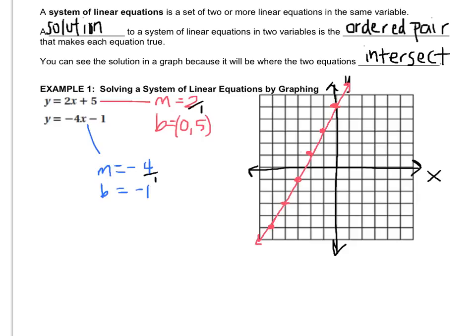And write the equation on it, y equals 2x plus 5. Now we graph the other one. Put a dot at negative 1, and the slope is down 4, right 1, and now we'll go up 4, left 1. Y equals negative 4x minus 1.